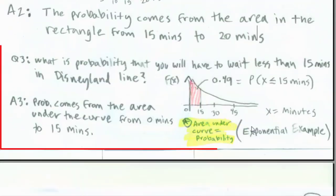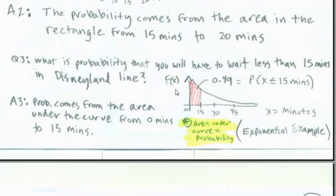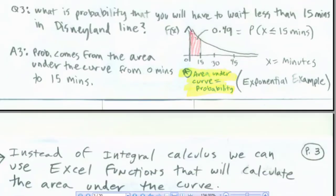And finally, for our exponential distribution, we're allowed to ask a question like, what is the probability that you will have to wait less than 15 minutes in a Disneyland line? The area or probability will come from the area under the curve. The answer will be 0.49%. So we get the idea. It's always going to be between two x values. And it's going to be area, which is probability.